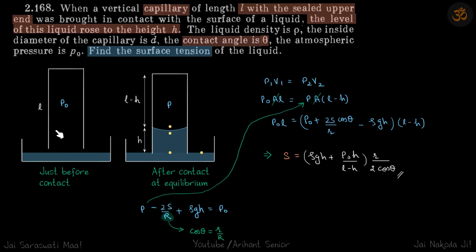Initial pressure is p0, initial volume is L into A, final volume is A into L minus h for the gas. We will eliminate p, and the only variable now will be surface tension s. We'll solve it and get our answer.